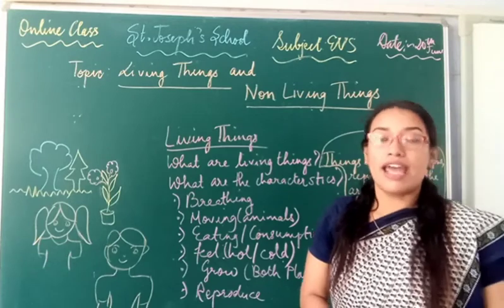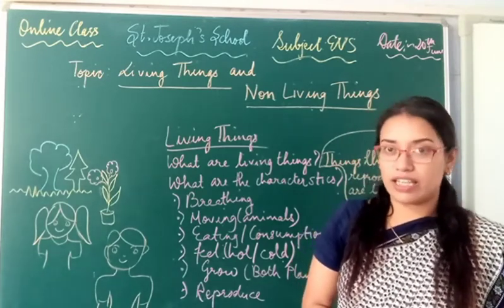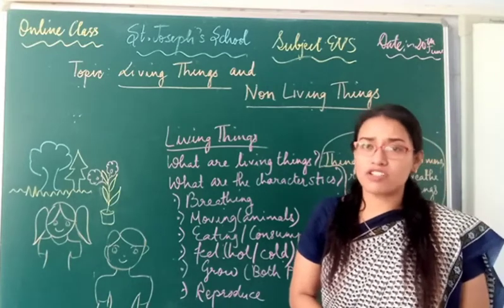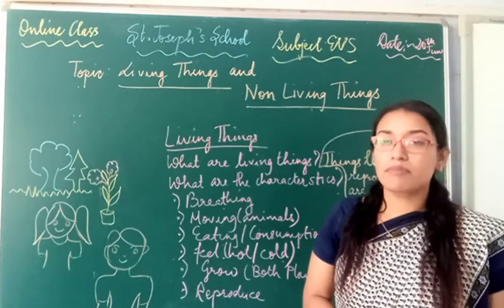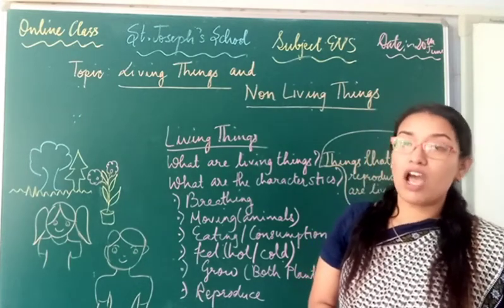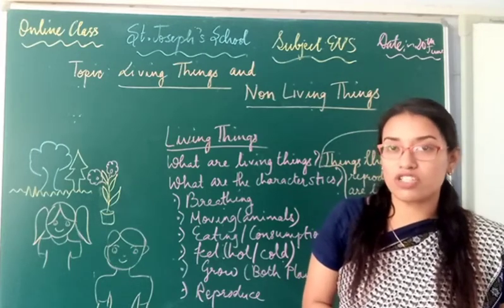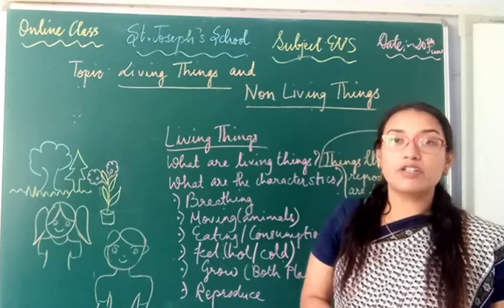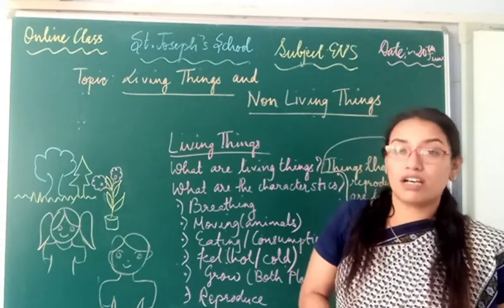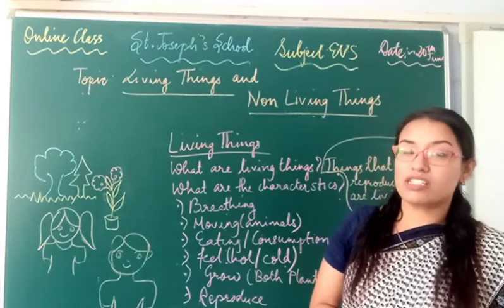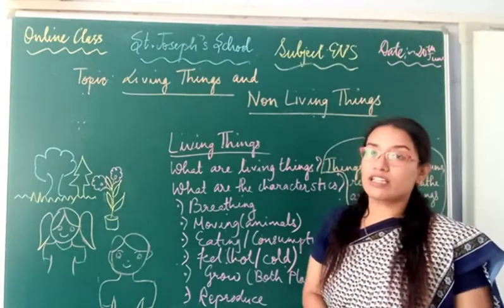Living things. Anything that is living in our environment is known as a living thing. Now you must be having questions and doubts about why I am teaching this topic. Because today in this modern scientific world where people are more into science and technology, and science has seen great developments, we have come to know about many inventions and new knowledge. So, what are living things?